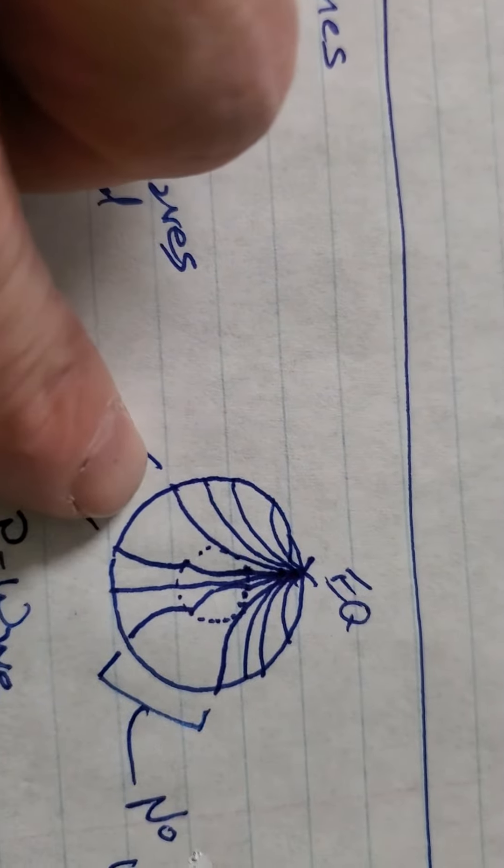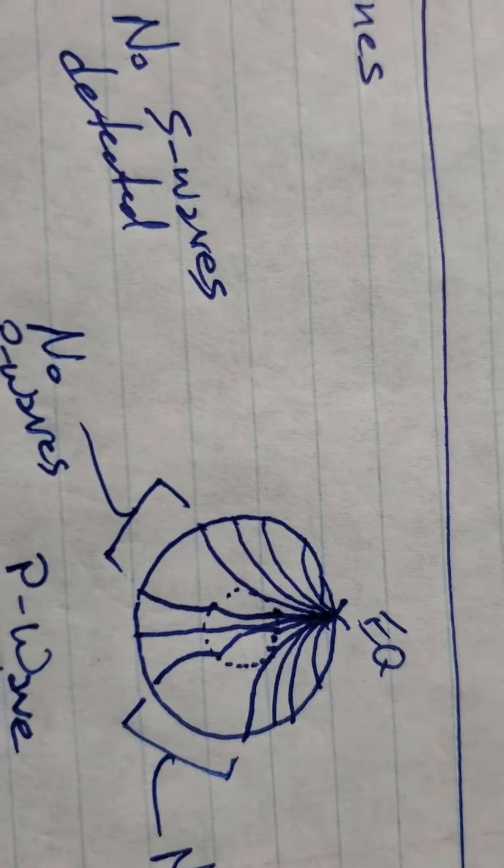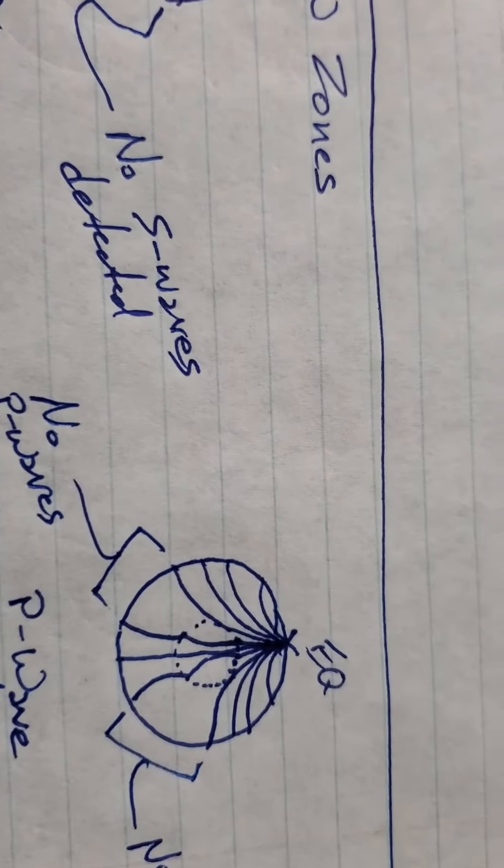So there's a shadow zone for the P-waves over here and over there. What I need people to think about is think this 3D. What would that look like at the surface?